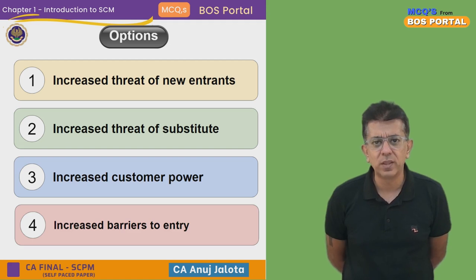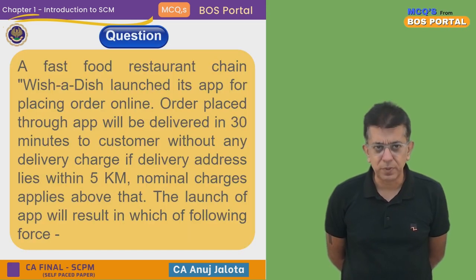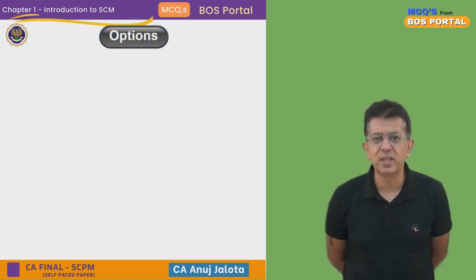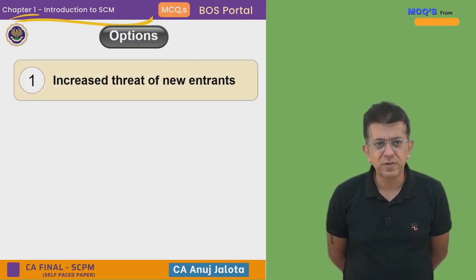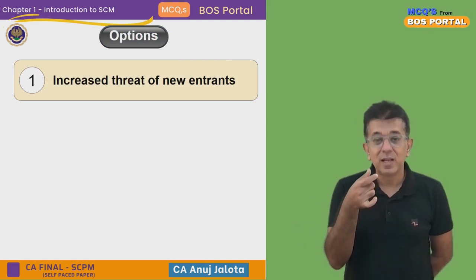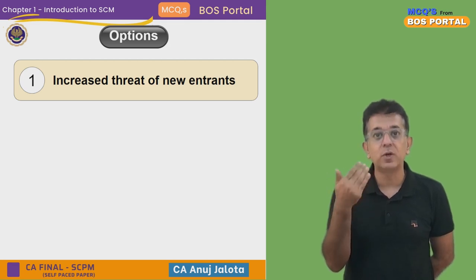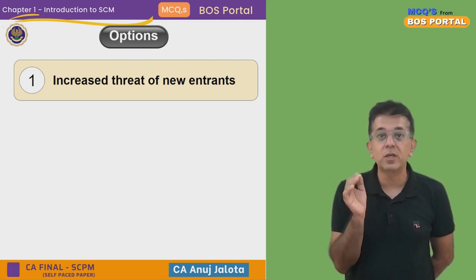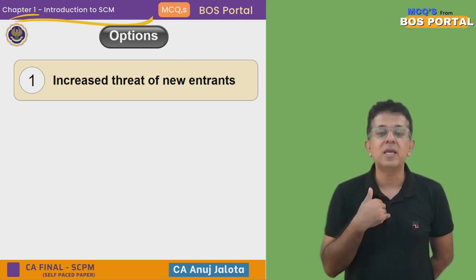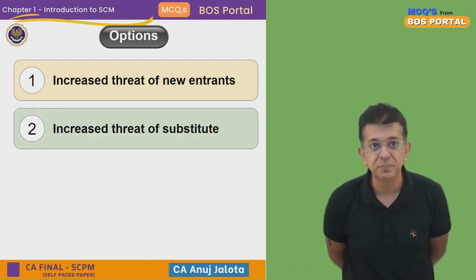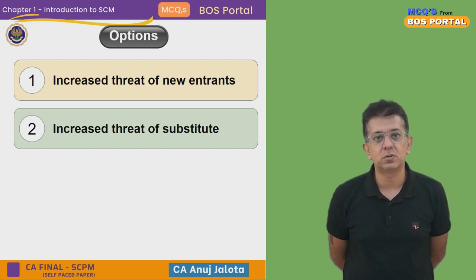Let's examine them one by one. We are a company — a fast food restaurant chain — and if anybody orders, we deliver within 30 minutes. Now, how would this create a threat of new entrants? We are launching something that will actually be difficult for others to copy, because they also need to deliver within 30 minutes. So this will not increase competition — in fact, it works in our favor, as other companies in the same business will have to match us. As for increased threat of substitutes, how does launching this app result in a substitute? That option doesn't make sense.